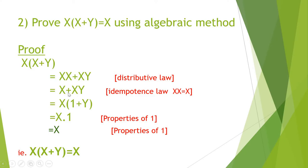Then again, similar to the previous problem, we take x outside. That gives x into 1 plus y. By properties of 1, 1 plus y is equal to 1, so we get x into 1. And x dot 1 is equal to x by properties of 1. Therefore x into x plus y is equal to x.